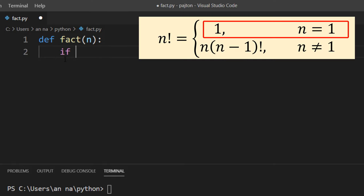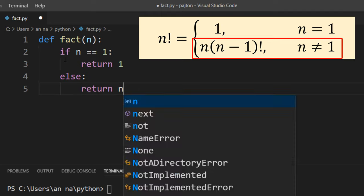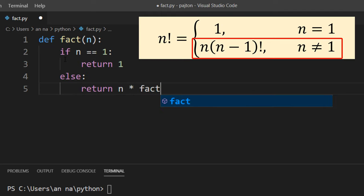So our recursive formula said that if n is equal to 1 then we're going to return 1 as the result, and otherwise we're going to return n times factorial of n minus 1.